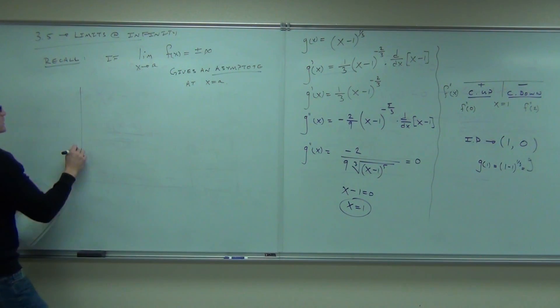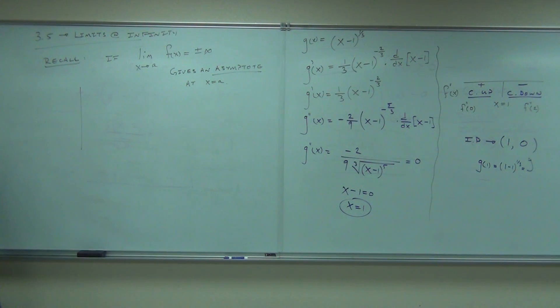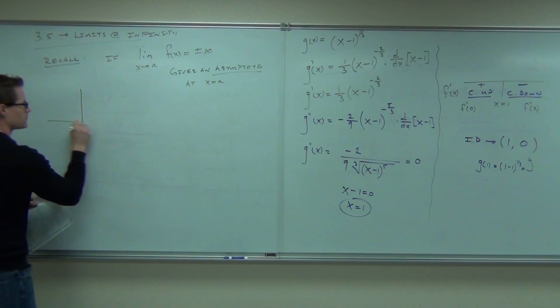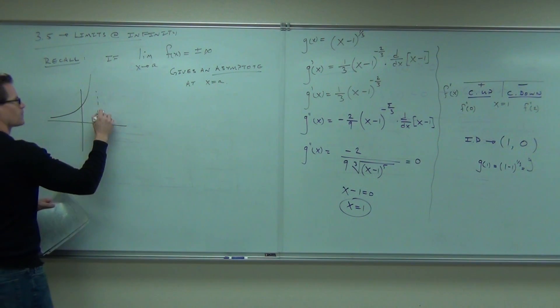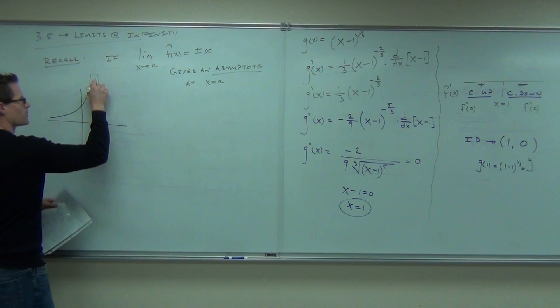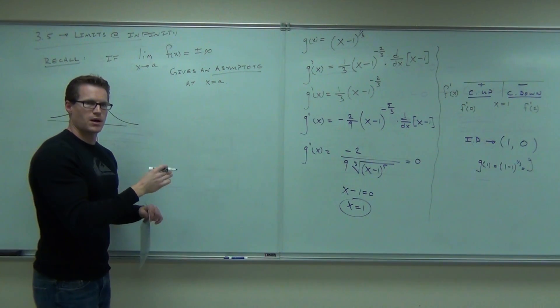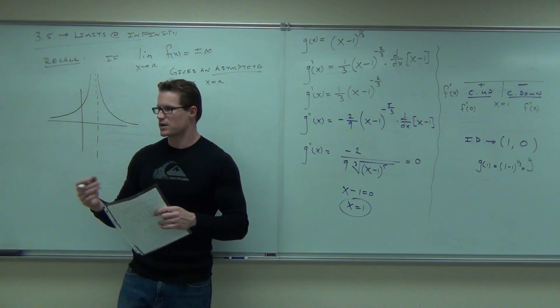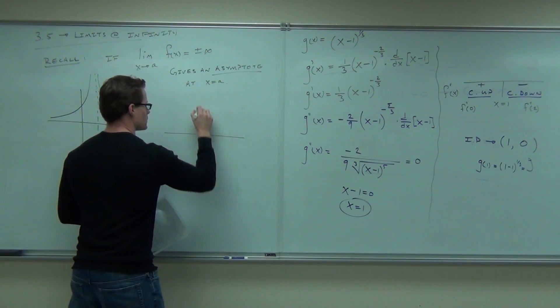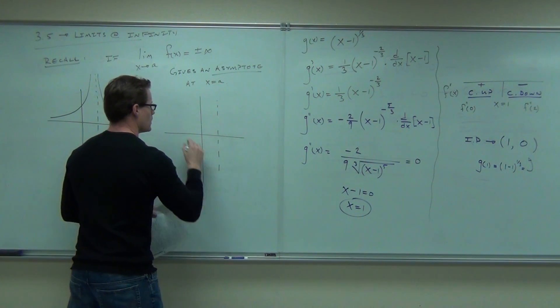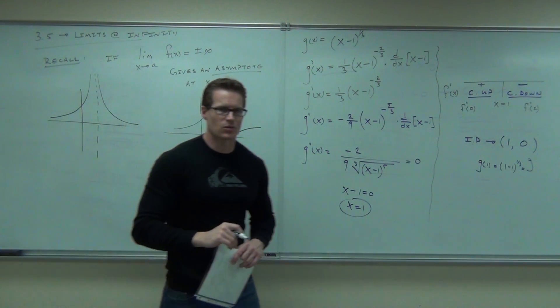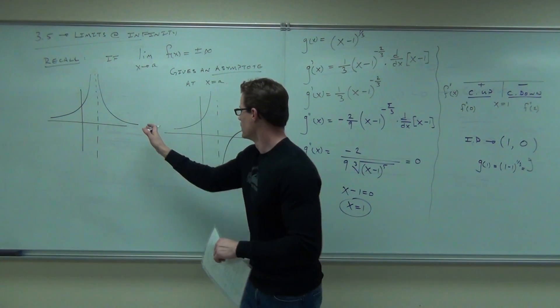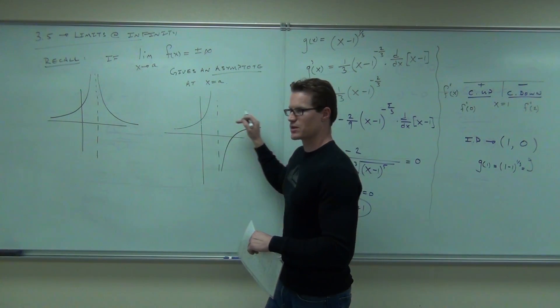And we had two cases, really. We had this case, where we went to the same infinity, positive infinity on both sides, and said the limit existed. The limit was positive infinity there. Or we had this case, where one went up, another went down. We said the limit didn't exist there. One's going to positive infinity as we go from the left, one's going to negative infinity as we go from the right.